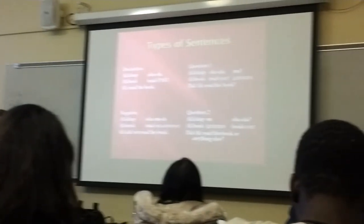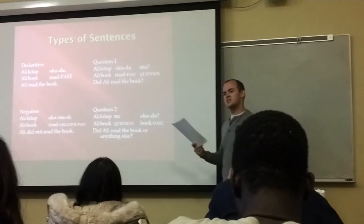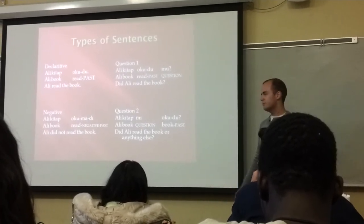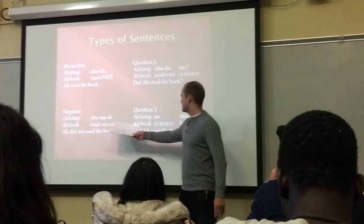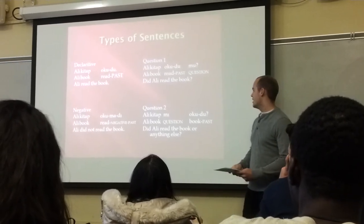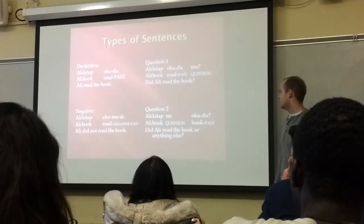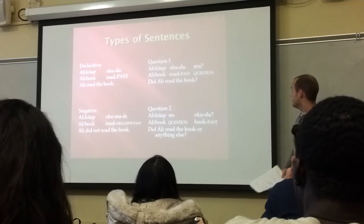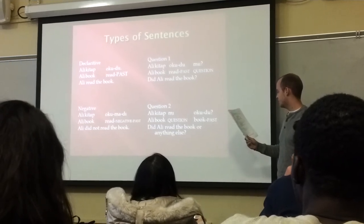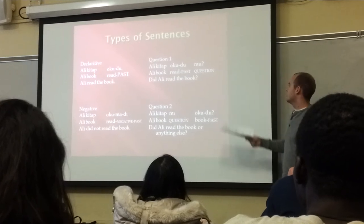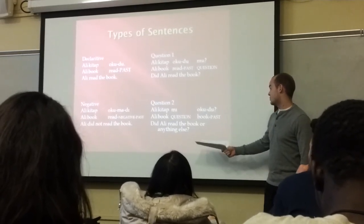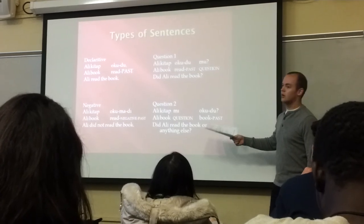Types of sentences: just like English, Turkish has declarative sentences, continuous tenses, negative sentences, and so on. A declarative sentence: 'Ali kitabı okudu' — 'Ali read the book.' For a negative sentence, you use a negative marker — in this case, '-ma.' However, there are four different negative markers shown in your handout. For questions, you add a question marker: mi, mi, mu. 'Ali kitabı okudu mu?' means 'Did Ali read the book?' Importantly, where you place the question marker changes the meaning — placing it before the verb shifts emphasis.